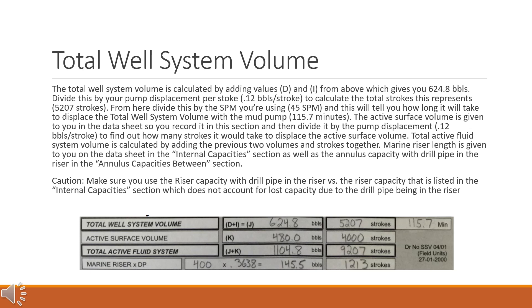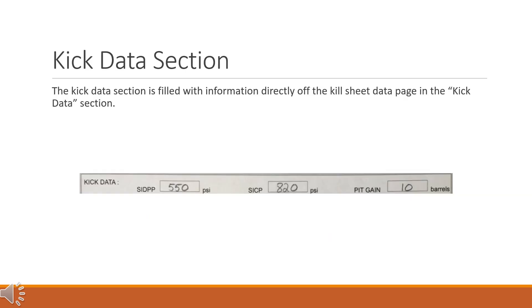Marine riser length is given to you on the data sheet in the internal capacities section, as well as the annulus capacity with drill pipe in the riser in the annulus capacities section. Caution: make sure you use the riser capacity with drill pipe in the riser, versus the riser capacity listed in the internal capacities section which does not account for lost capacity due to the drill pipe being in the riser. The kick data section is filled with information directly off the kill sheet data page in the kick data section.